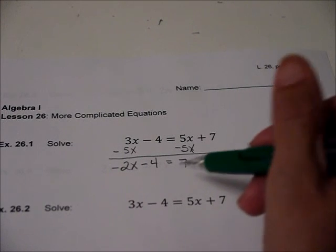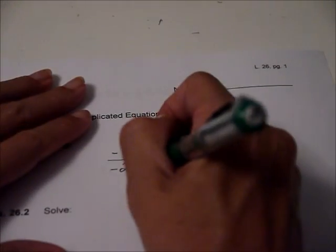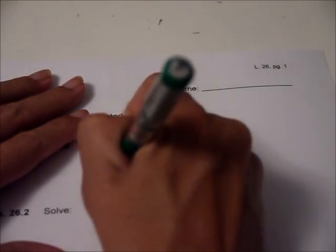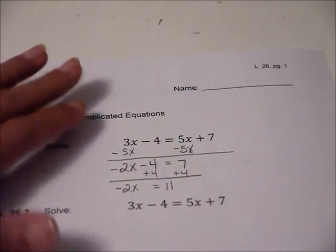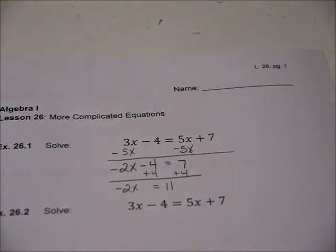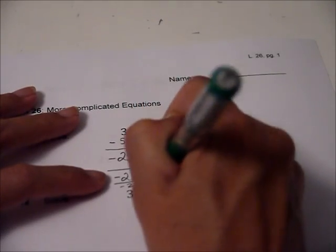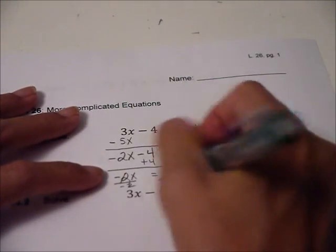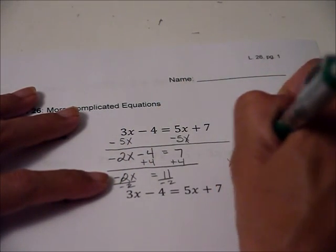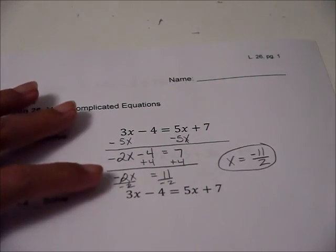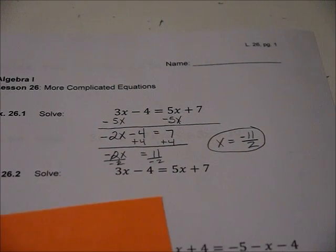We have a negative five x and a positive three x, so we have negative two x minus four equals seven. Now, this looks like one we've done in the last lesson. Let's get rid of the four over here. Let's add four, and we have negative two x equals eleven. Now I'm going to divide both sides by negative two, and that cancels out. So we have x equals negative eleven halves.